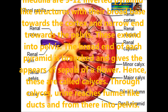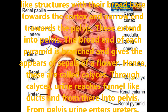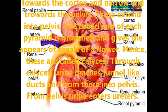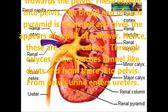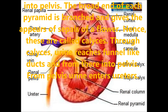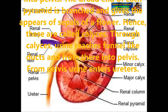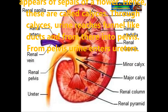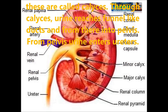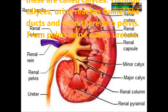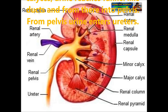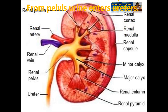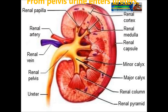The broad ends of each pyramid are branched and give structures that appear like the sepals of flowers. Hence, these are called calyces. Through the calyces, urine reaches funnel-like ducts and from there into the pelvis. From the pelvis, urine enters into the ureters.